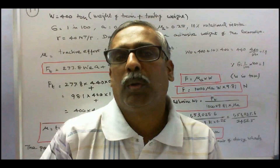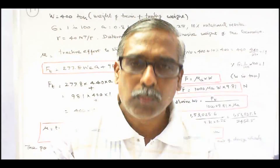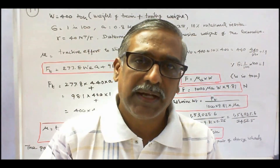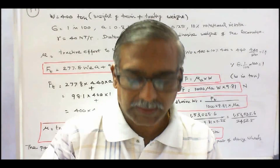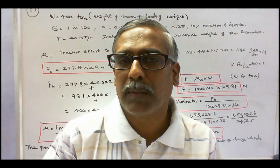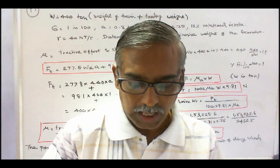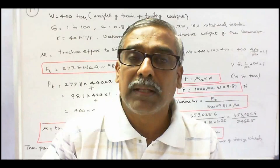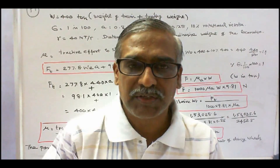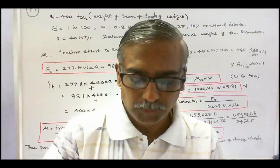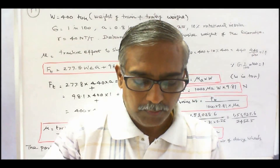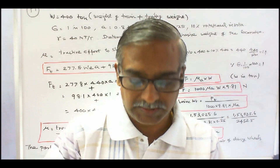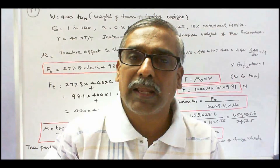Problem number 1: A locomotive accelerates a 400-ton train up a gradient of 1 in 100 at 0.8 km per hour per second. Assuming the coefficient of aggregation to be 0.25, determine the minimum adhesive weight of the locomotive. Assume the train resistance is 40 N per ton and allow 10% for the effect of rotational inertia.